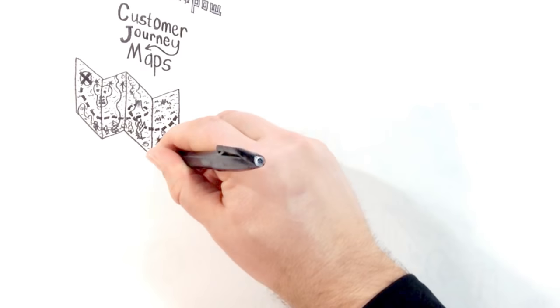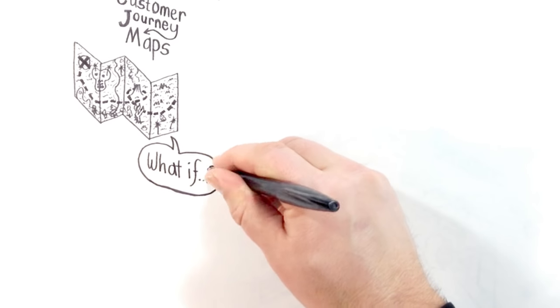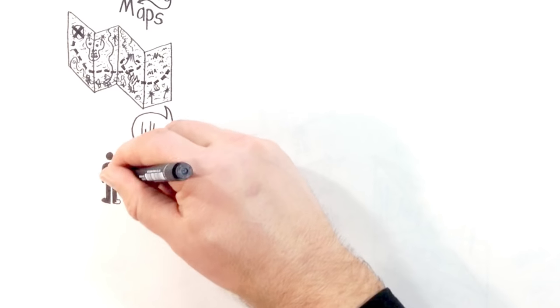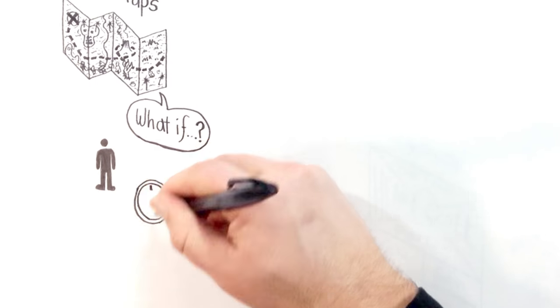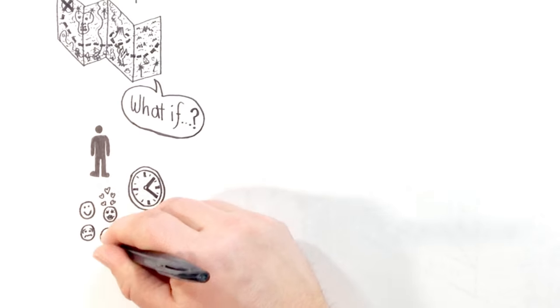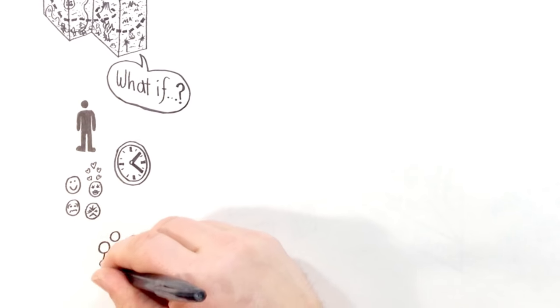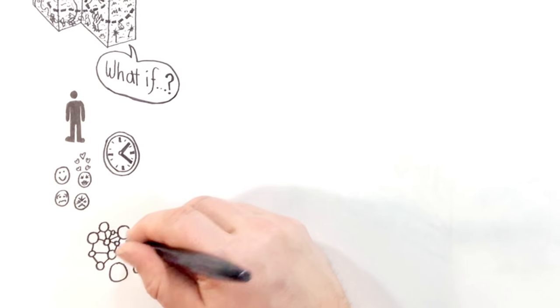A journey map helps us explore answers to the what-ifs that arise during research and conceptual design. They should include items like personas, a timeline, the emotions being felt by customers, touchpoints, and channels where the interactions are taking place.